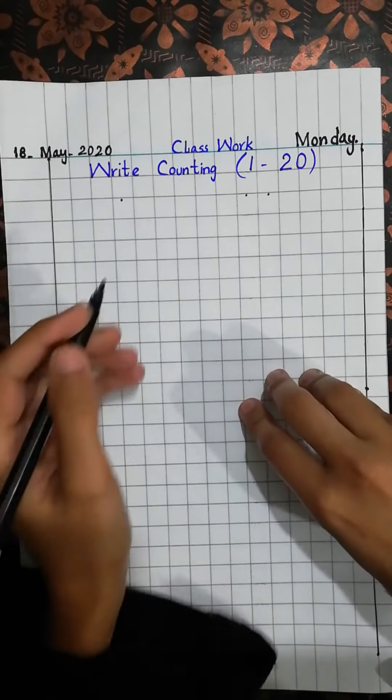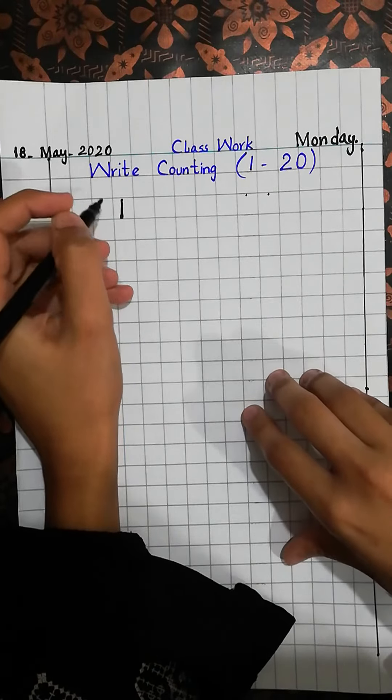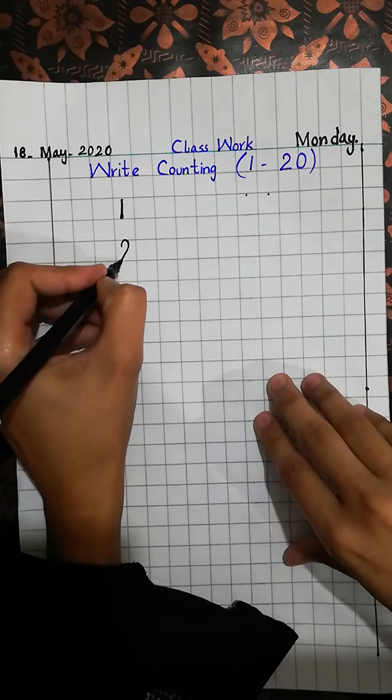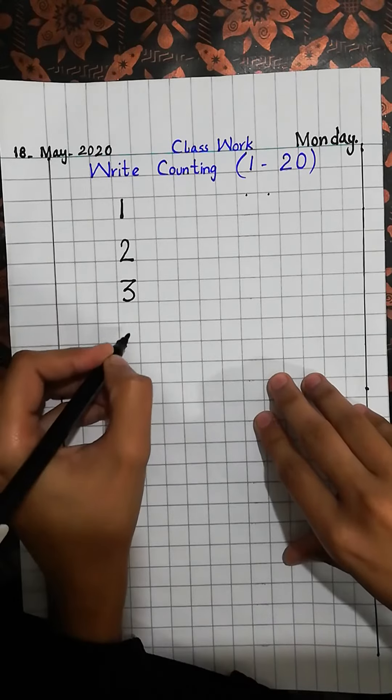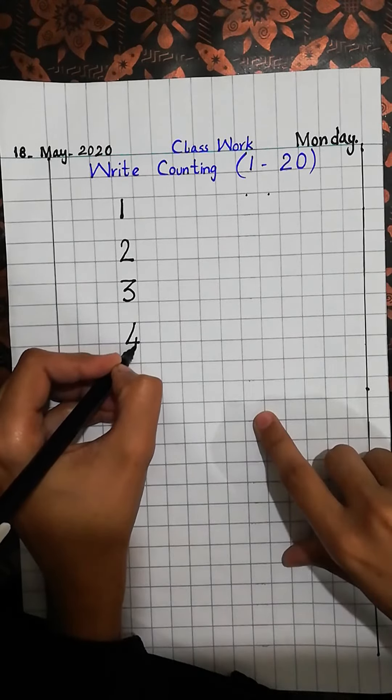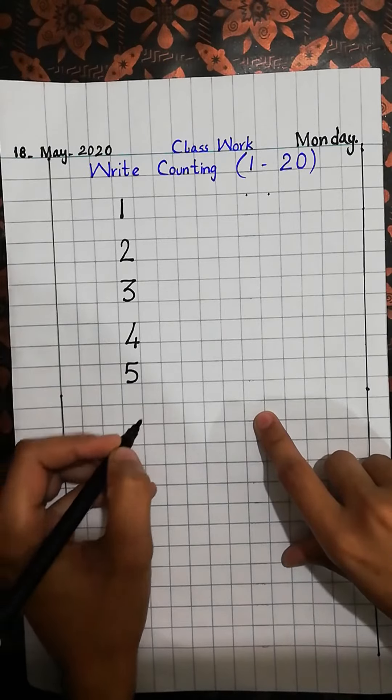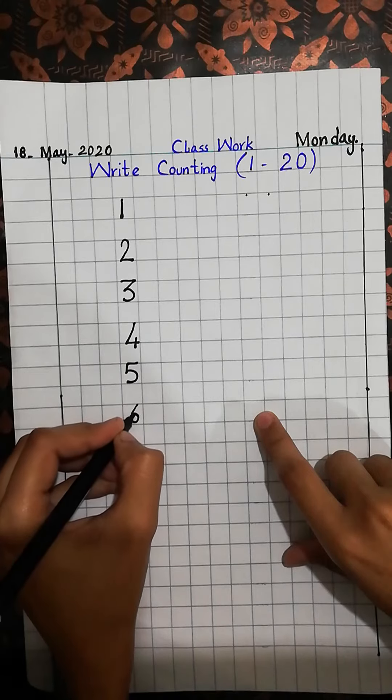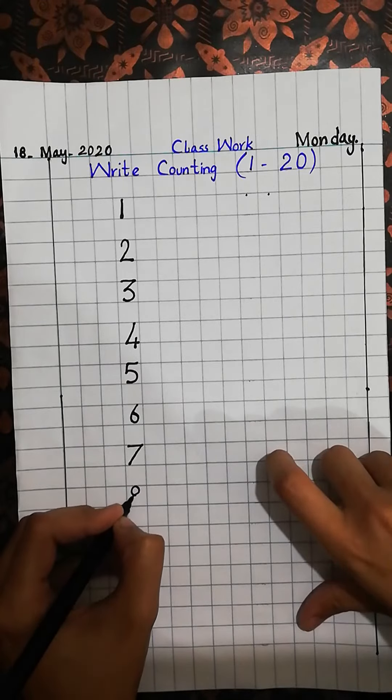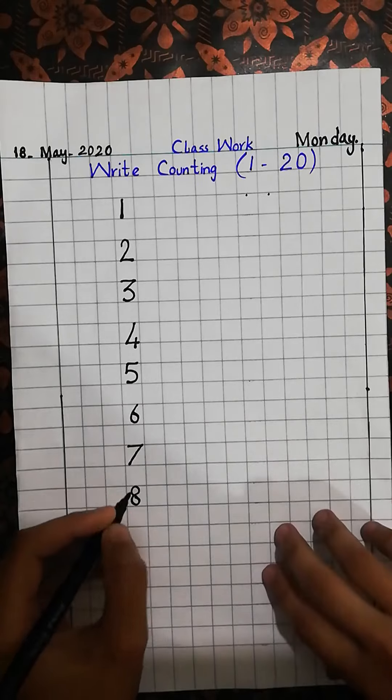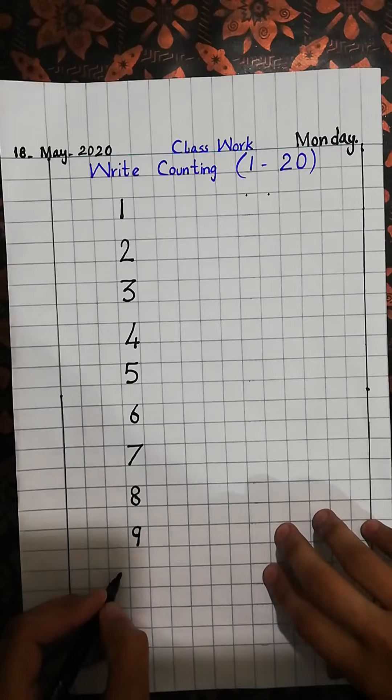Start writing with me. 1. What will be the next number? 2. 3. 4. 5. 6. 7. 8. What will be the next number? 9. And then 1, 0. 10. Come to the next column.